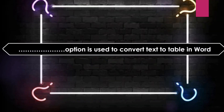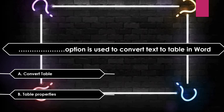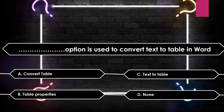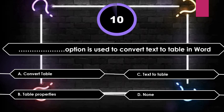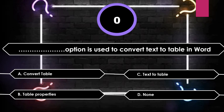Which option is used to convert text to table in Word? Options: Convert Table, Table Properties, Text to Table, None. The answer is Convert Table.